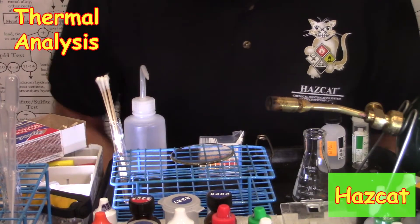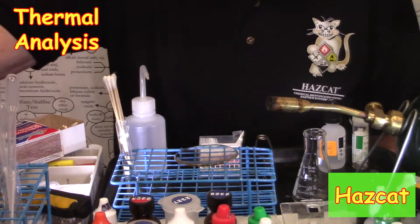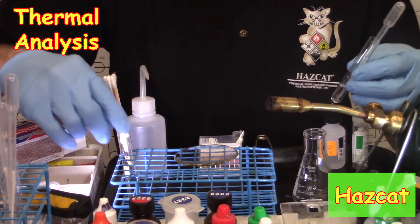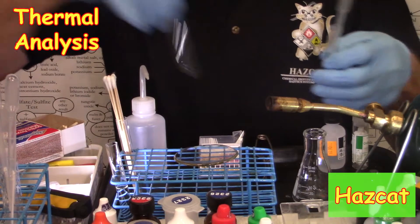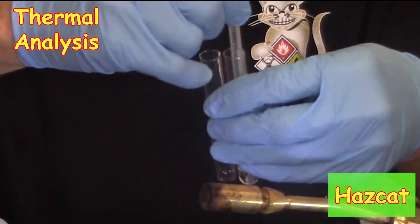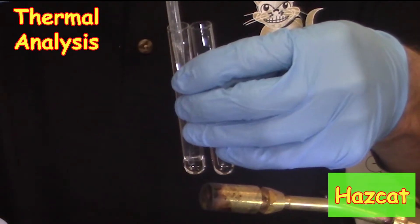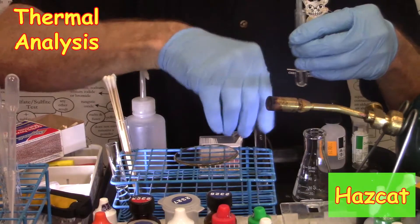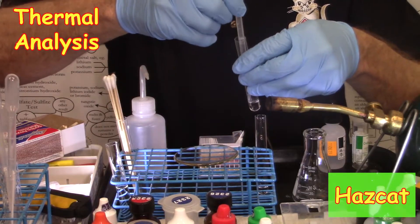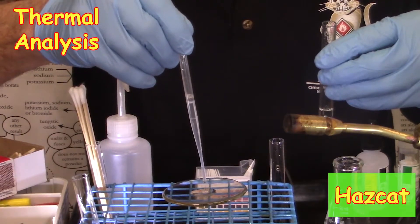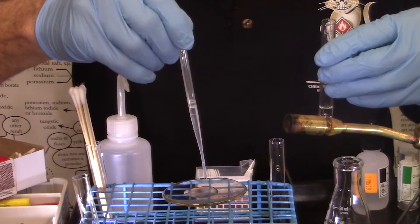Today we're going to conduct a thermal analysis. I'll start by showing you it with a liquid unknown. First thing I do is take a quarter inch of the unknown liquid into a new test tube, and then I need 24 drops of the unknown on a watch glass.